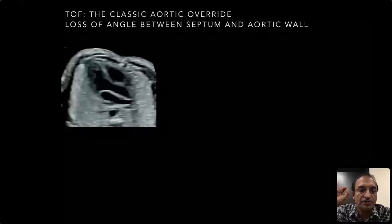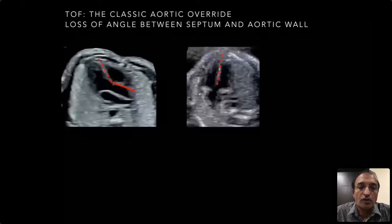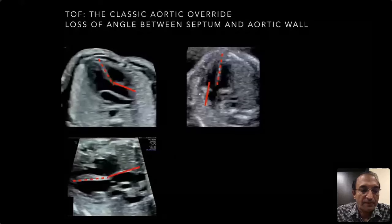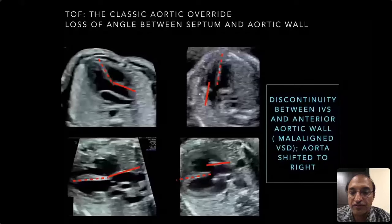The hallmark feature of tetralogy of Fallot relates to septo-aortic continuity. Normally there is continuity between the ventricular septum and the anterior aortic valve. In tetralogy of Fallot, that is lost — there is septo-aortic discontinuity. Here in the lateral view you can see the septo-aortic continuity, and in tetralogy of Fallot you see the septo-aortic discontinuity, which results in the VSD.